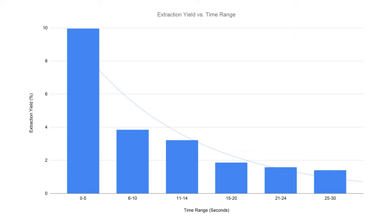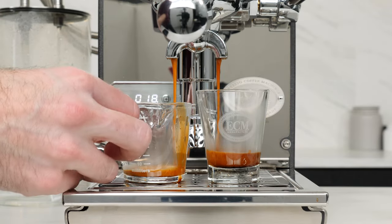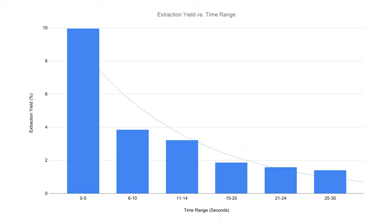Next, let's look at the extraction yield per time range — the percentage of the puck dissolved into each five-second window. Considering our overall extraction yield for the full 30 seconds was around 21.8%, it's pretty wild that almost half of that happened in the first five seconds of flow through the puck. The trend isn't necessarily as clean on this chart, and that's likely due to human error when swapping cups, since chances are I wasn't hitting exactly five seconds on the dot between exchanges, plus any tiny drops that ended up on the outside of the cup.